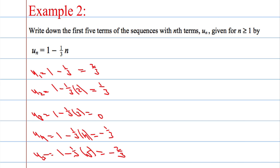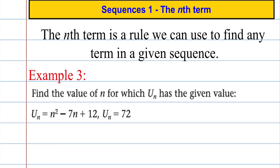So we just substitute values of n in to get the different terms in the sequence. Now a slightly different example — we're asked to find a value for n for which u(n) has a given value. I need to work out what term of the sequence has a value of 72. So what we do is let the sequence n squared minus 7n plus 12 be equal to 72.